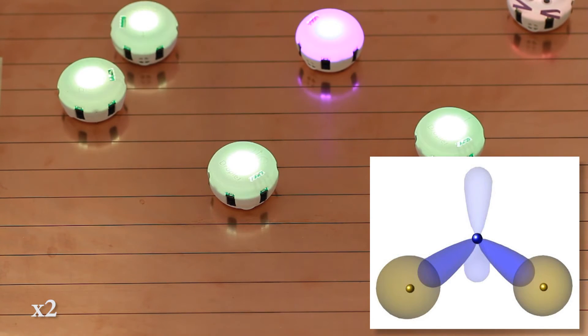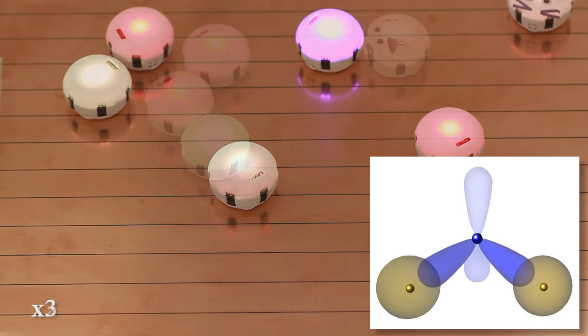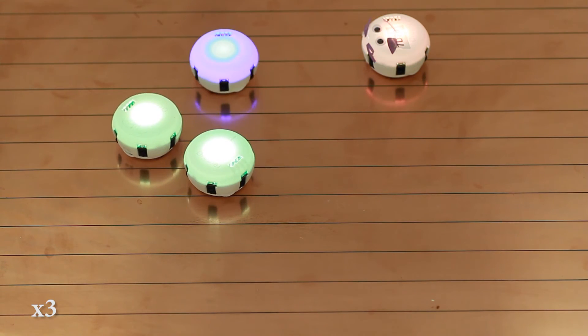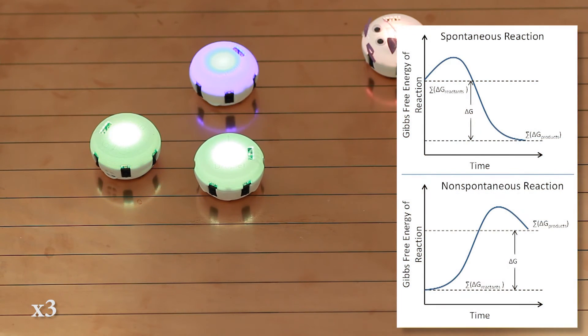Orbital hybridization is used to determine the molecule's geometry. Here, hydrogens are shown moving toward the oxygen in H2O to form water's characteristic V shape.